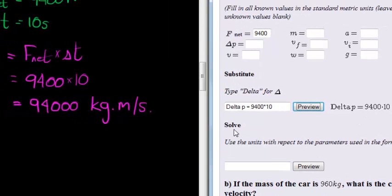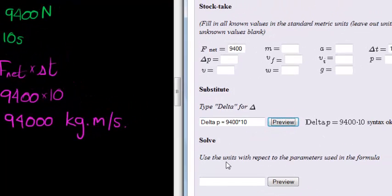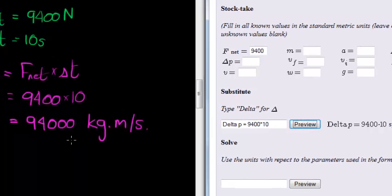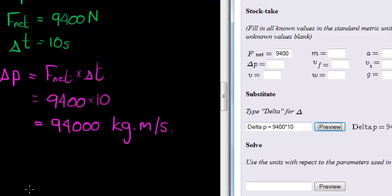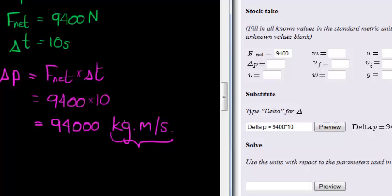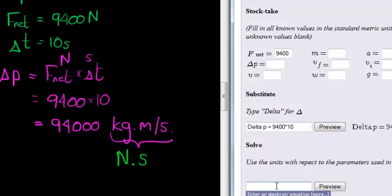And now they say we should solve it, but we should use the units with respect to the parameters used in the formula. Now, I made a mistake then with my unit. But those units were given in kilogram meters per second. However, we used newtons and seconds. So that's another unit we are allowed to use, is newtons times seconds. That is what we can use for change in momentum.